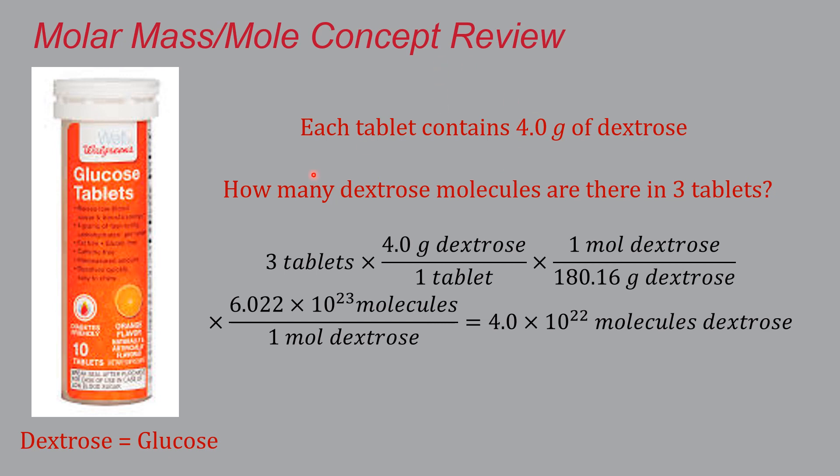Here is the solution. We've got three tablets. Each tablet contains four grams of dextrose. So these cancel, this gives us a mass of dextrose. We know that each mole of dextrose weighs 180.16 grams. Grams of dextrose cancel here, and now we have an amount of dextrose in moles. We also know that one mole is defined as 6.022 times 10 to the 23rd. This gives us a number of individual molecules. That's the units that we want. Crunch the numbers and you should get a very large number of 4 times 10 to the 22nd molecules of dextrose.